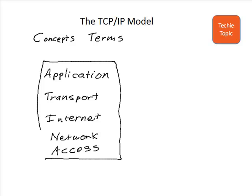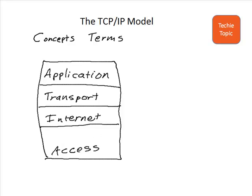The reason I misspoke and said two is that later a different version of the TCP/IP model started being used, which took that bottom network access layer, as you see here, and split it out into two parts: the data link layer and the physical layer. So on the right you see the five-layer model that is most commonly used today.